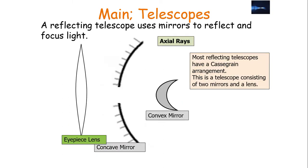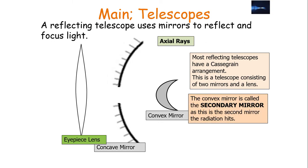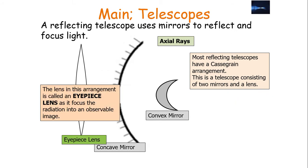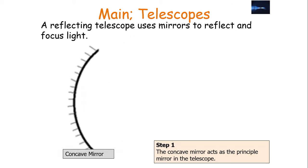Most reflecting telescopes have a Cassegrain arrangement — a telescope consisting of two mirrors and a lens. The parabolic concave mirror is called the primary mirror, as it's the first mirror the radiation hits. The convex mirror is called the secondary mirror, as it's the second mirror the radiation hits, whilst the lens is called the eyepiece lens as it focuses the radiation into an observable image. These three optical devices — the primary concave mirror, secondary convex mirror, and eyepiece lens — work together to produce an image.